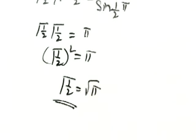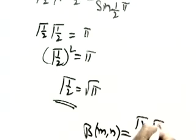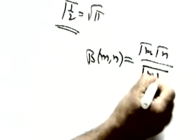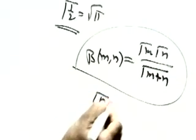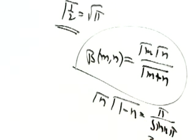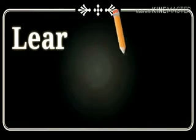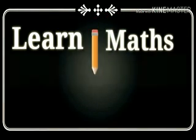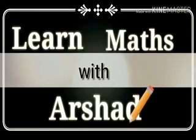In today's class we have done four proofs of beta and gamma function properties. In the next class we will prove the important relation between the beta and gamma functions, and one more difficult proof. Please subscribe, share, and like the channel — we will continue in the next class.